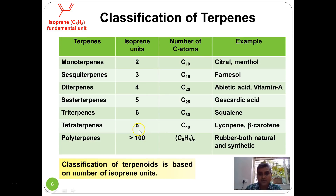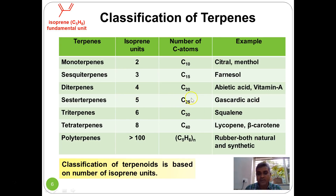Corresponding to these isoprene units, carbon atoms occur in multiples of five: C10, C20, C30, and C40 for monoterpenes, diterpenes, triterpenes, and tetraterpenes respectively; C15 and C25 for sesquiterpenes and sesterterpenes. Examples include citral and menthol for monoterpenes, squalene for triterpenes, and lycopene and beta-carotene for tetraterpenes. The lower classes — monoterpenes and sesquiterpenes — are relatively steam volatile and are major constituents of essential oils.